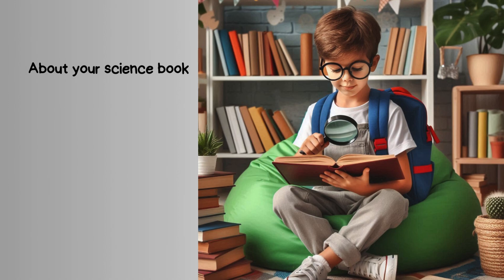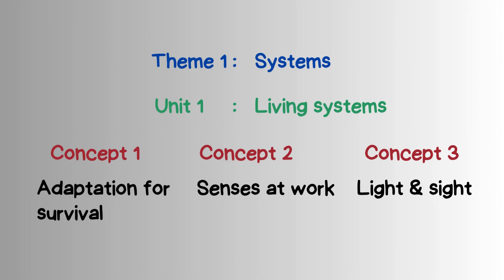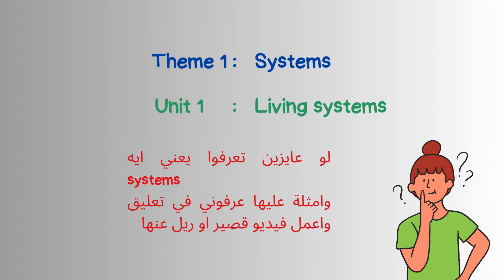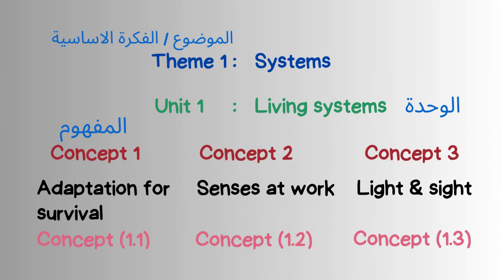Now we want to talk about your science book. We have two themes. Theme one talks about systems. Let me know in the comments if you want to know the meaning of 'systems' and I will make a short video about it. Theme one — Systems — contains Unit 1: Living Systems, and this unit has three concepts. Concept one talks about adaptations for survival, and we will learn what adaptation and survival mean.